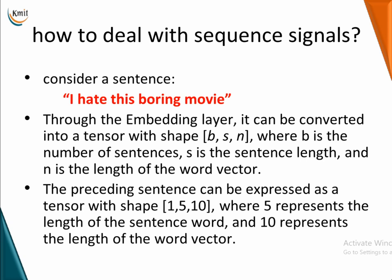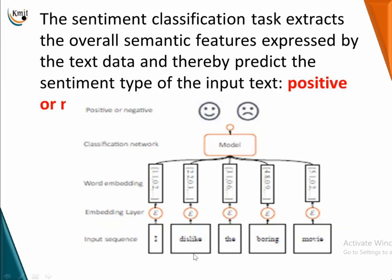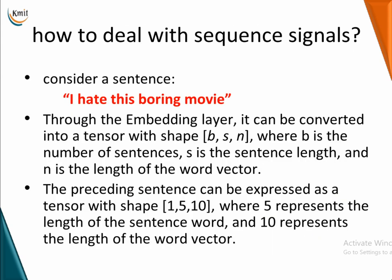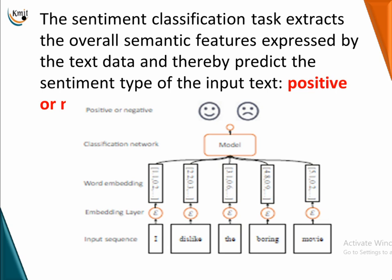Now, how do we deal with sequence signals? For example, consider the sentence 'I hate this boring movie.' Through the embedding layer, it can be converted into a tensor with shape B comma S comma N, where B is the number of sentences, S is the length of the sentence, and N is the word vector length. For this sentence, the shape would be 1 comma 5 comma 10. For a sentiment classification task, the sentence goes through an embedding layer producing word vectors, which are then fed into a neural network to output a positive or negative classification.